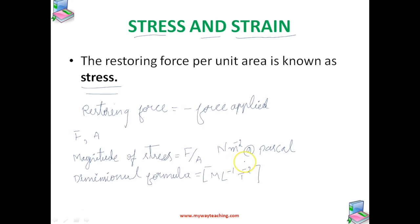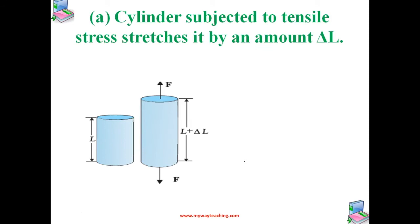There are three ways in which a solid may change its dimensions when an external force acts on it, as we can see in the figures. In the first case, a cylinder is stretched by two equal forces applied normal to its cross-sectional area. The restoring force per unit area in this case is called tensile stress.